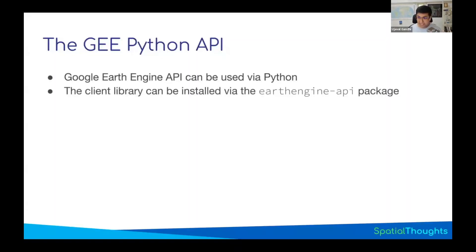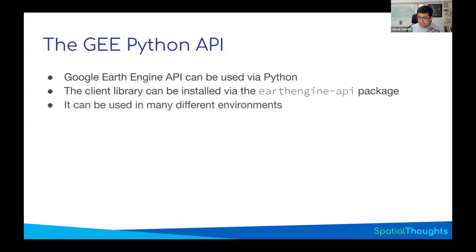To use the Python API, you have to install a package called Earth Engine API. In Python, you have some core packages that come with the language. If you want to use something else, you have to install a package. This package is available via pip and conda, which are the two main ways Python folks install packages. The advantage of using Python is that it is supported across so many different environments. You don't have to go to the code editor — you can do all your work in a notebook environment and use Earth Engine there.